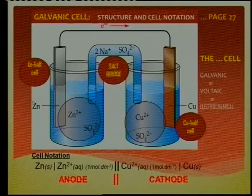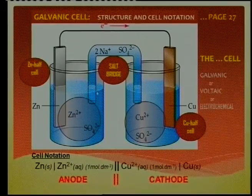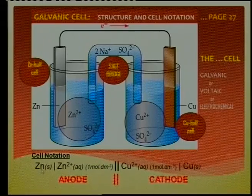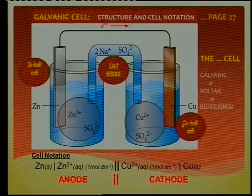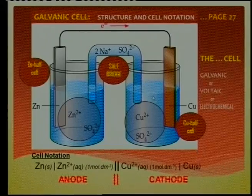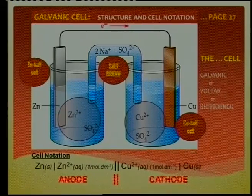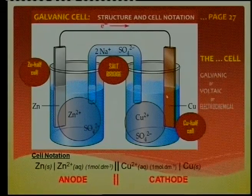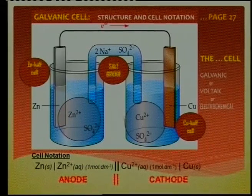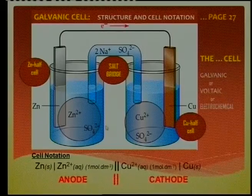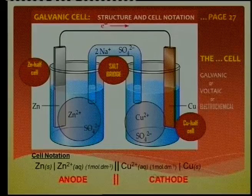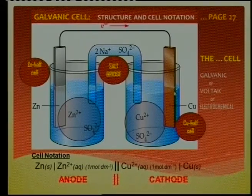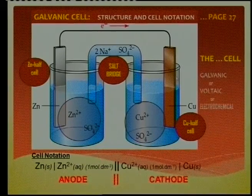In short, we write it: zinc, then a dash to indicate the phase boundary, then zinc ions. On the other side: copper ions, then a boundary — meaning we move from aqueous solution to solid — then copper. According to international agreement, we normally have the anode on the left and the cathode on the right. This is where the half reactions take place: two half reactions make up the complete galvanic cell.